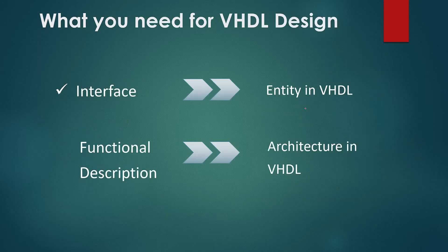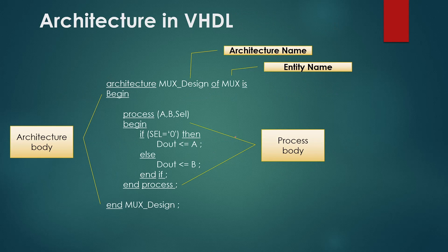So we now have a basic understanding of the entity where we define the interface of our module. The entity is a separate design unit but will be associated with an architecture where we describe the functional description of our digital system in terms of behavior, structure, or a set of concurrent statements. Let's understand the architecture now. We will take the MUX example again. We start the architecture with the statement: architecture mux_design of mux is. Here mux_design is the architecture identifier and mux is the entity identifier we created. This means architecture mux_design is associated with the entity called mux. After the architecture declaration we type BEGIN and from here you can start writing your functional design — this is called the architecture body.